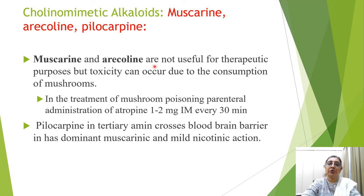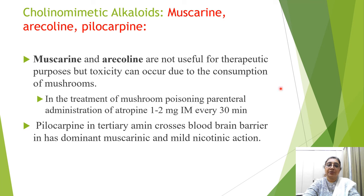The alkaloid group of directly acting cholinomimetic drugs includes muscarine, arecoline, and pilocarpine. Muscarine and arecoline are not useful therapeutically, but toxicity can occur from consumption of mushrooms containing muscarine. Treatment of mushroom poisoning involves parenteral atropine 1 to 2 mg intramuscularly every 30 minutes to antagonize the cholinergic effects.